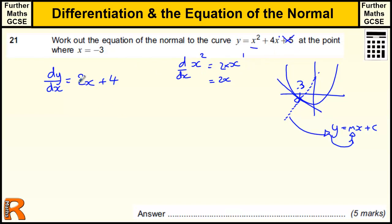So we've got the differential is 2x plus 4. So that's the function of the gradient. That tells us what the gradient is at every single point along the x-axis. So the point we want, x equals minus 3.